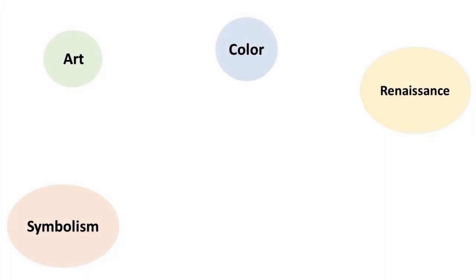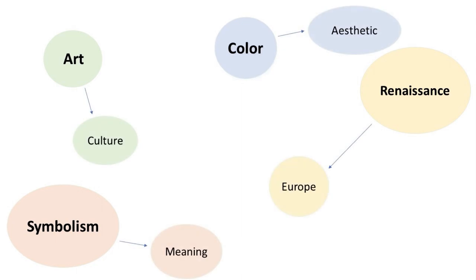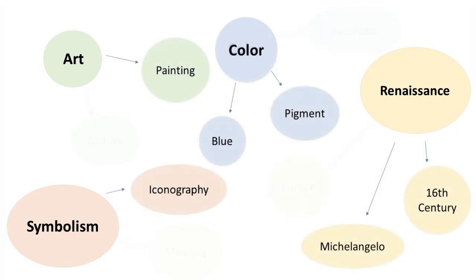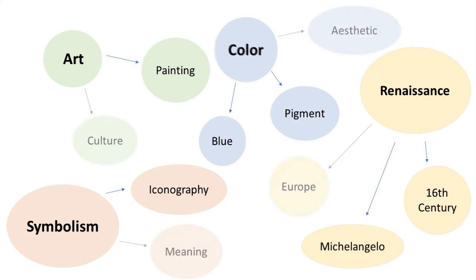You should also think about synonyms for your keywords that are both broader and narrower. Broader terms will return more results but they will likely be less relevant. These terms are better for when you're just starting your research and are on the hunt for more sources and more keywords. Narrower keywords will result in fewer but more relevant sources. They are better for later on in your research when you know specifically what you are looking for and what you are not.